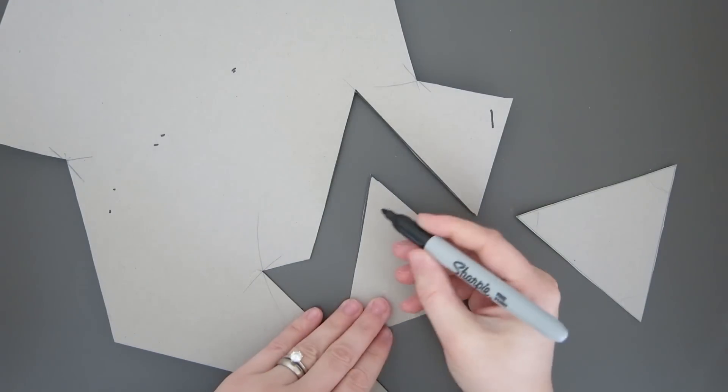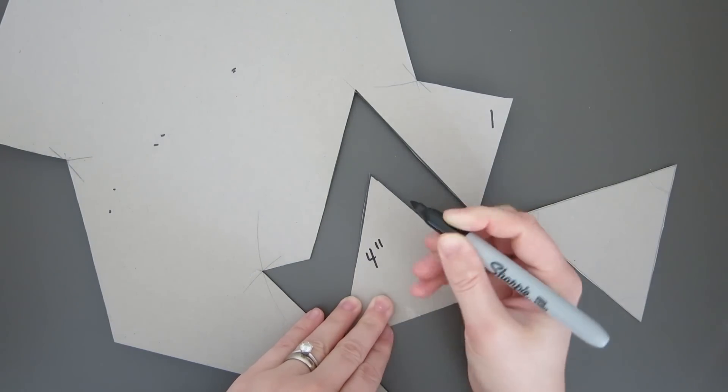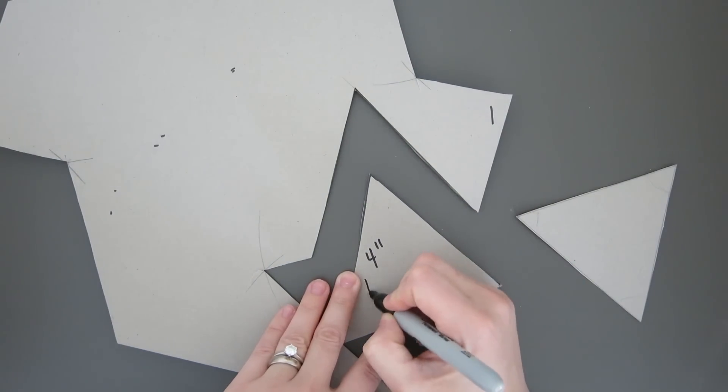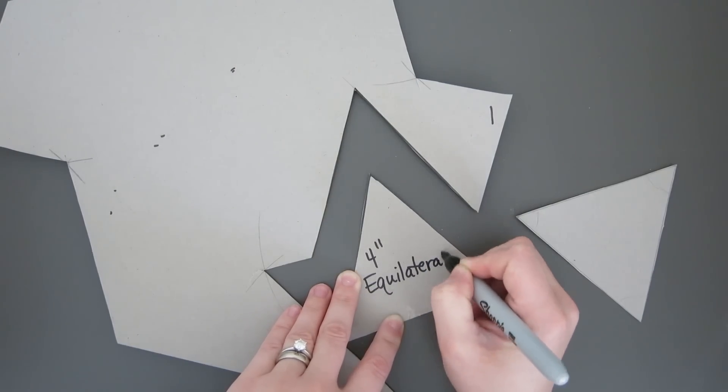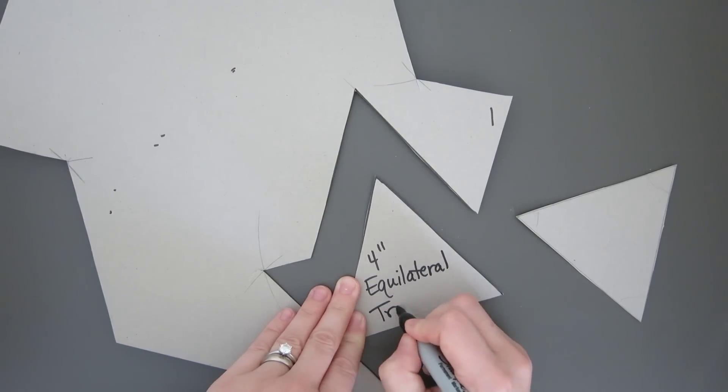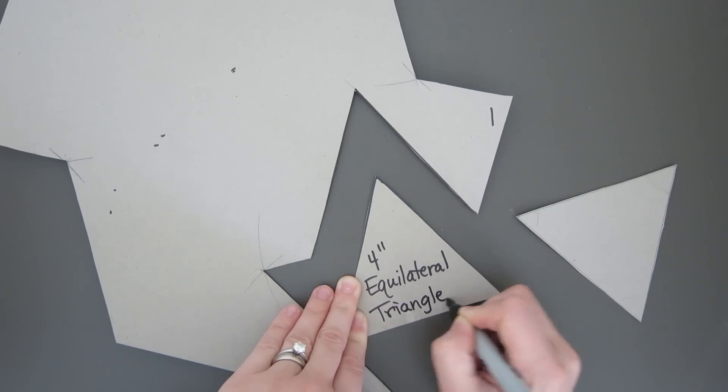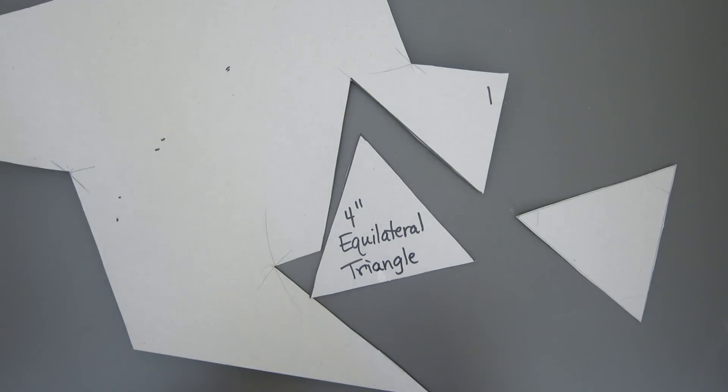I had mentioned in the other video, I do like to label them as soon as I've created them, any of my templates. I just find that it's easier to create something in the future if I know what size and shape the template is from the get-go.